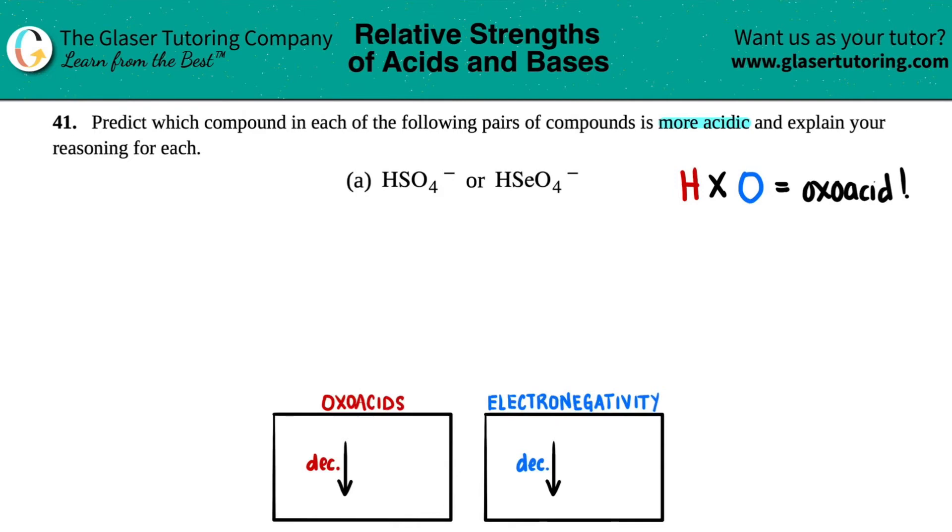Take note that we're not going to look for hydrogens because those are the same. We're not going to look for oxygens because those are the same. We're going to look for sulfur and selenium—S and Se. S is relatively on the top if we look on our periodic table, and Se is right below it.